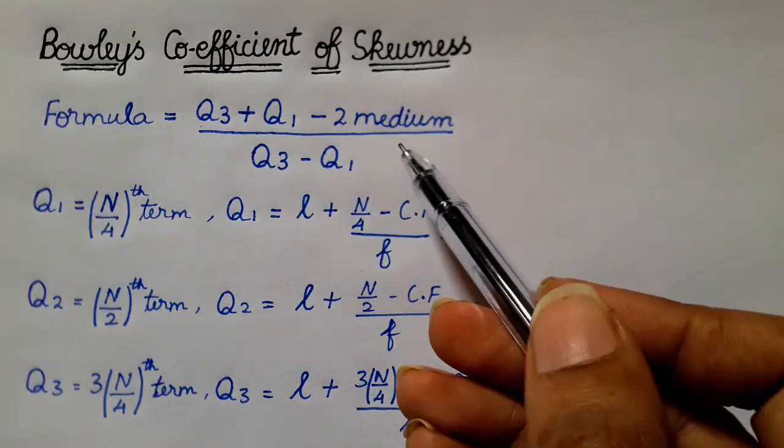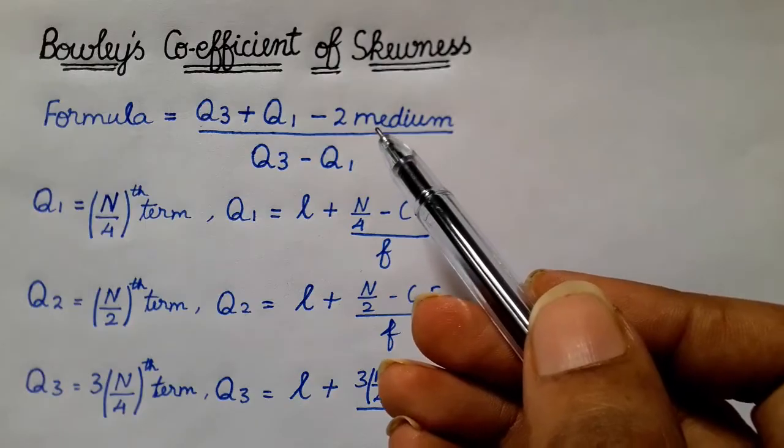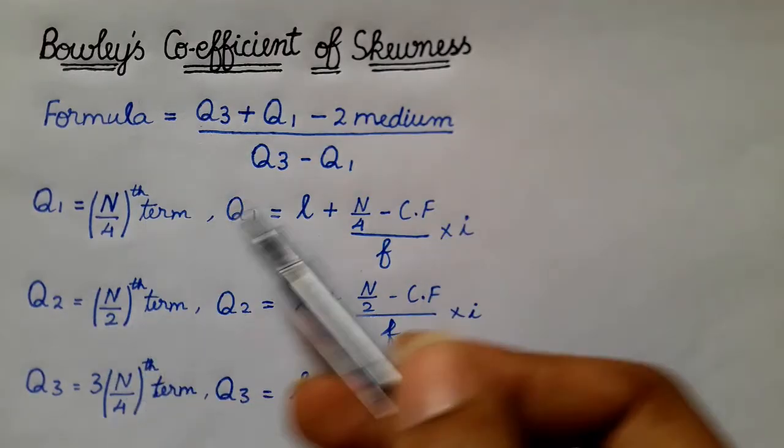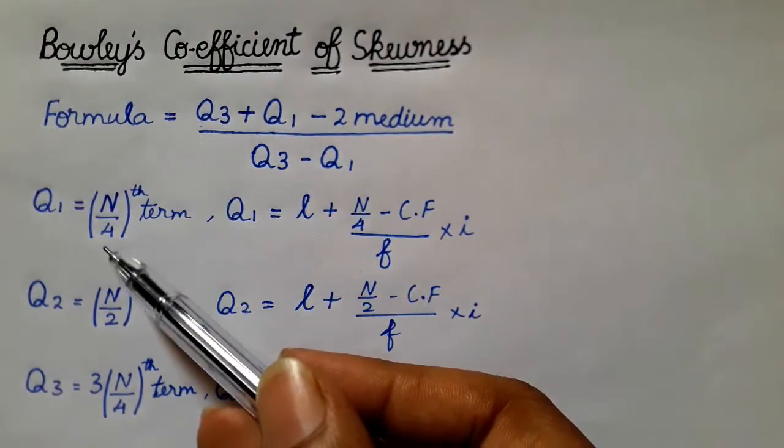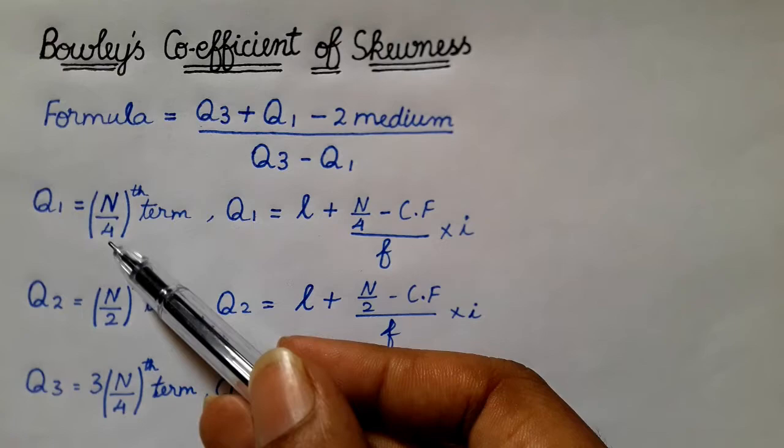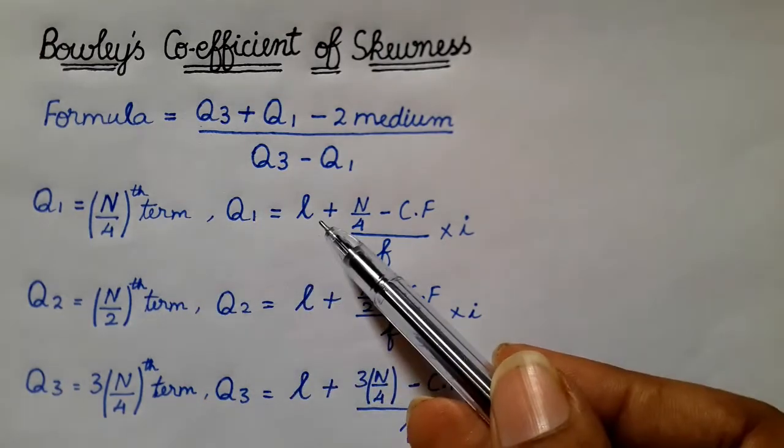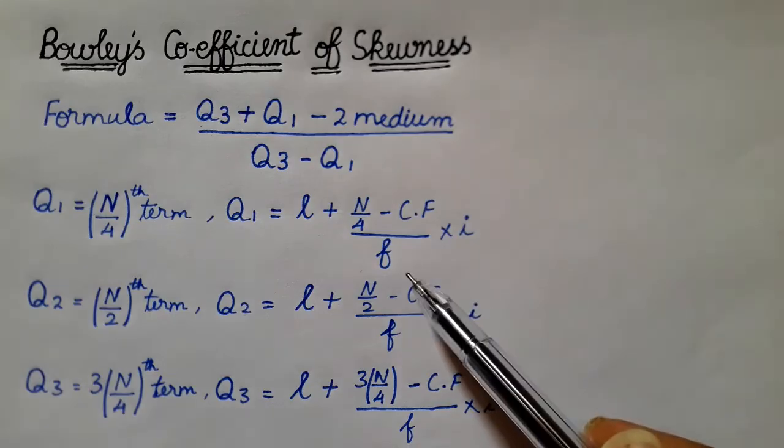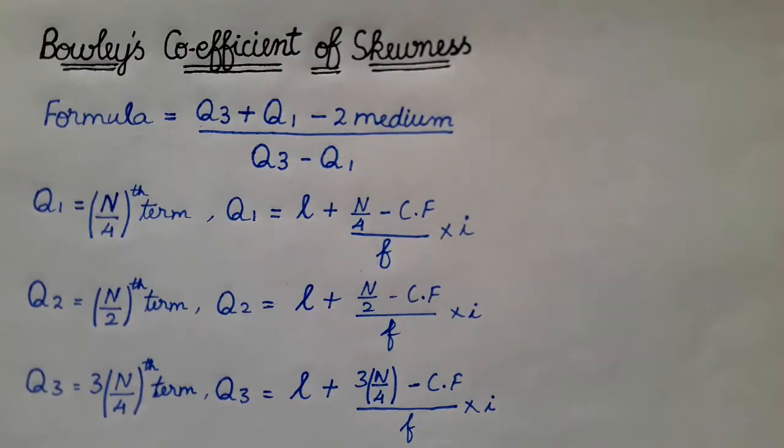The formula is Q3 plus Q1 minus 2 median divided by Q3 minus Q1. If you have a median for Q3 and Q1, we will talk about the same formula. Q1 is n divided by 4 and Q1 is L plus n divided by 4 minus cf divided by f into i. This is Q2 and Q3, this is the formula.